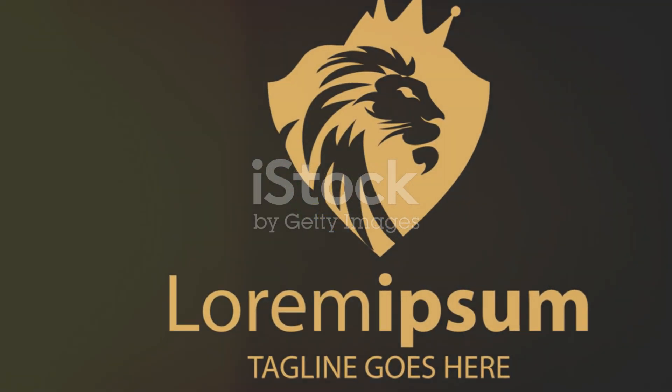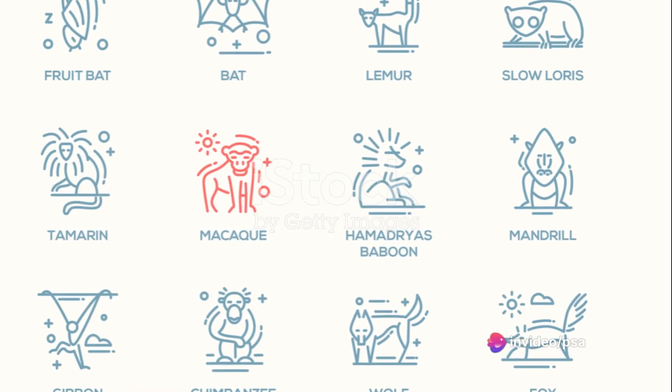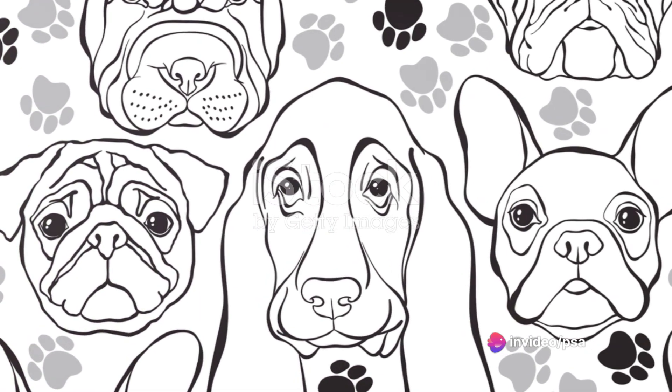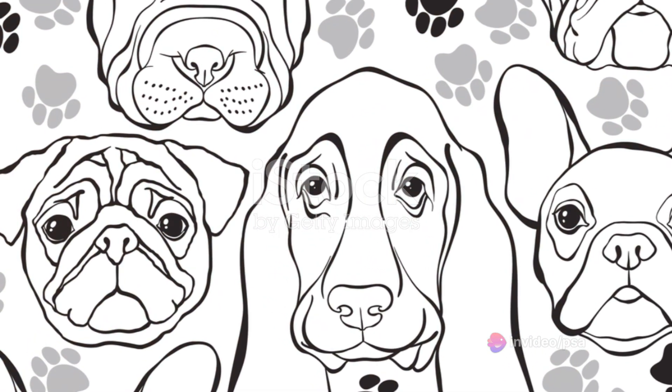They were now the rulers of the land, the skies, and the seas. The age of the dinosaurs had ended, and the age of mammals had begun, setting the stage for their eventual rise to prominence.